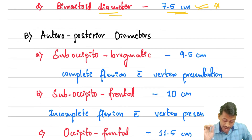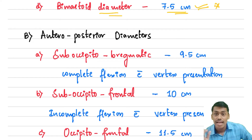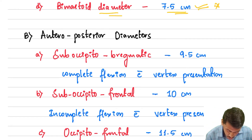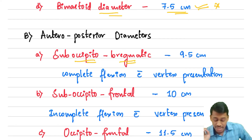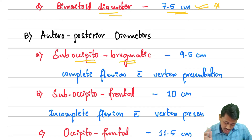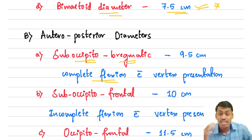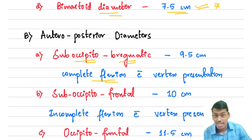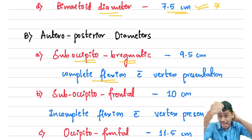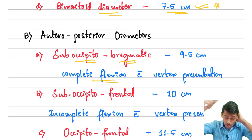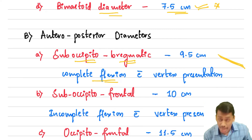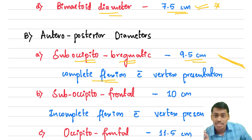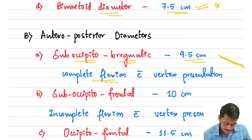Now we will move on to the antero-posterior diameters of the fetal skull. First is the suboccipitobregmatic diameter. This diameter occurs when there is complete flexion of the fetal skull. It goes from the occipital point all the way up to the anterior fontanel — that is the bregma. The suboccipitobregmatic diameter measures up to 9.5 centimeters and occurs during vertex presentation.